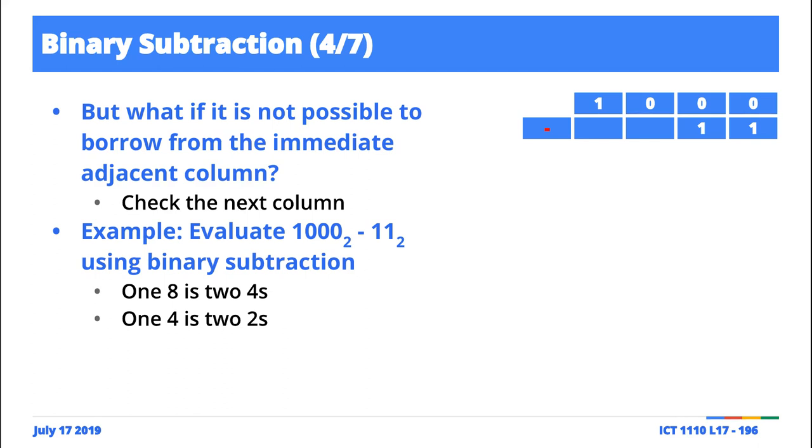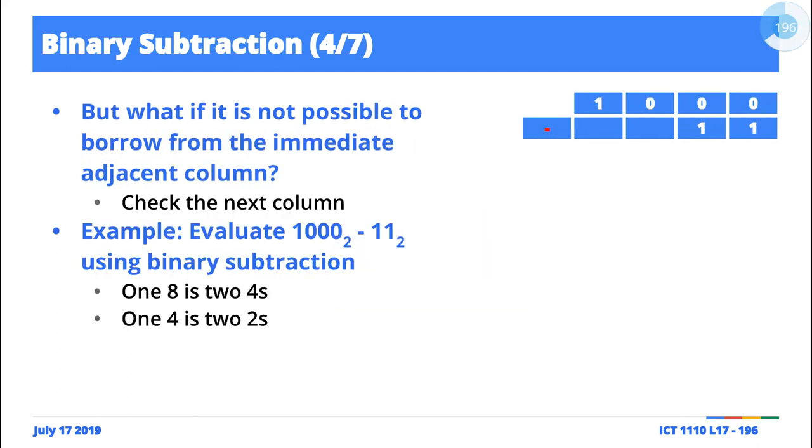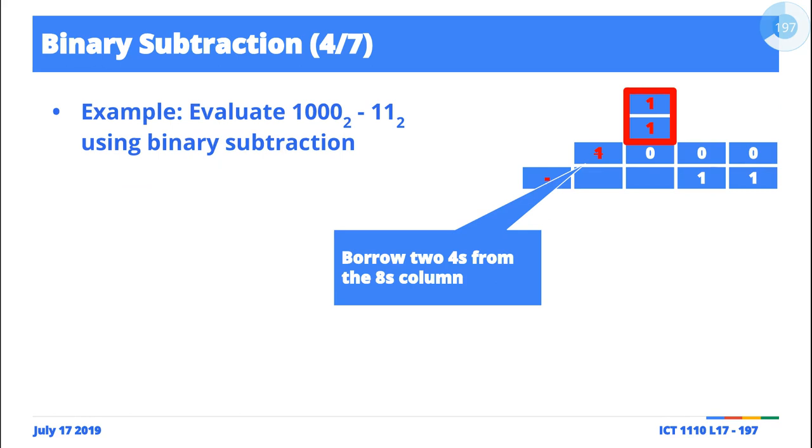So when we start evaluating, we can't borrow from zero here - there's nothing. We can't borrow from zero. We find a one here, and once we borrow it, we destroy this. Borrowing this means we'll have two ones here.